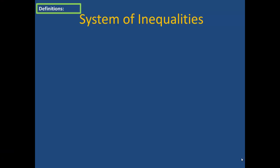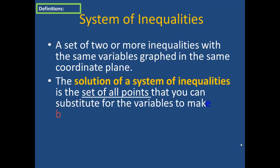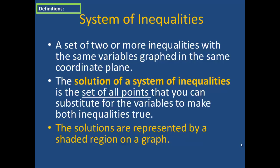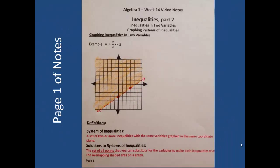We're now going to take a look at systems of inequalities. There's a place on the bottom of page 1 of your notes for the following definitions. A system of inequalities is a set of two or more inequalities with the same variables graphed in the same coordinate plane. This is very much like when we dealt with systems of linear equations. The solution of a system of inequalities is the set of all points that can be substituted for the variables to make both inequalities true. When completed, this is what page 1 of your notes should look like — take a moment to fill these in if needed.